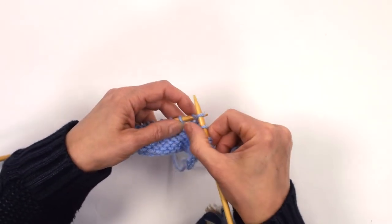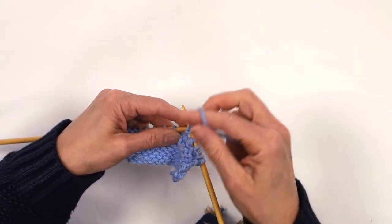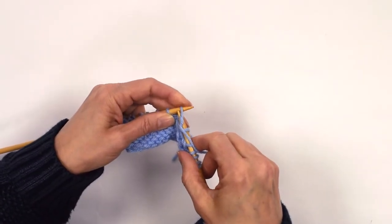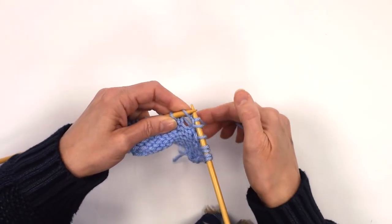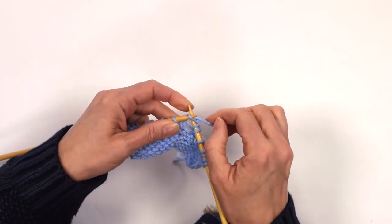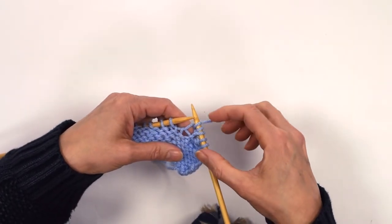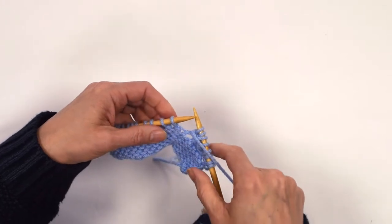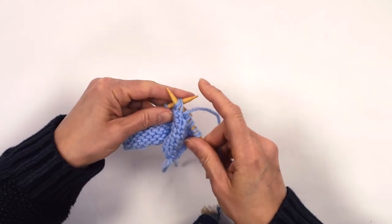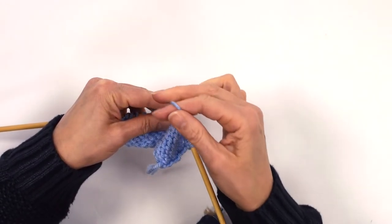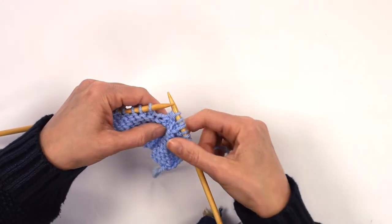You knit, bring the yarn back between the needles, work a purl, keep hold of this stitch here, back between the needles there and knit. So that's one stitch into three. Bring the yarn back between the needles, go through all three of the next stitches, wrap, cast them off.